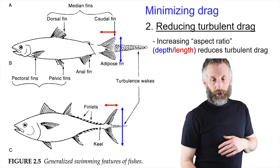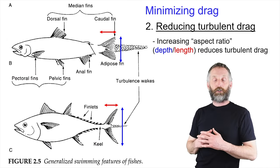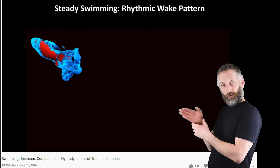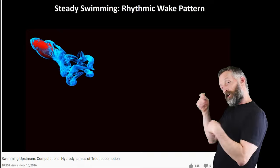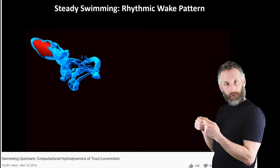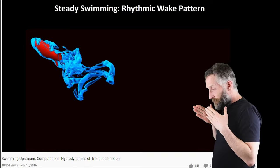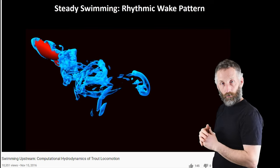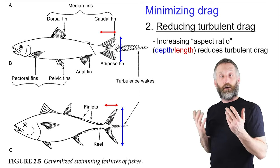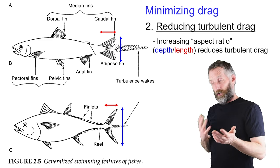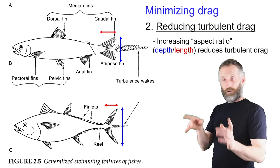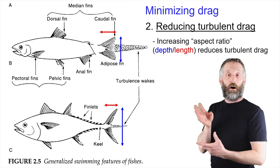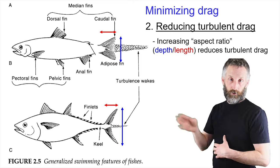Another form of drag that fish encounter is turbulent drag. As you're moving a surface through the water, it generates a lot of vortices which aren't pushing the water back to move you forward — instead they're just mixing the water around. That's inefficient because you're using a lot of energy and force to move the water around in turbulence, not in direct propulsion.